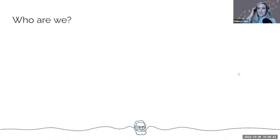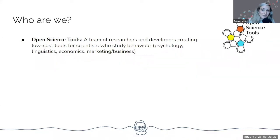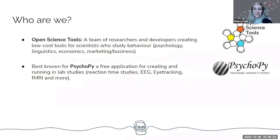I'll recap who we are in terms of Open Science Tools, which is our company name. We're comprised of a team of researchers and developers who aim to create tools for scientists who study behavior — psychology, linguistics, economics, marketing, business, anything with human behavior, but also animal behavior. We are most well known for PsychoPy, the free application for creating and running in-lab studies — reaction time experiments, and interaction with hardware including EEG, eye tracking, fMRI, and pretty much anything you can interact with through Python.